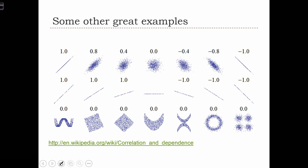Finally, I want to give you some examples of Pearson's R for some very peculiar scatter plots. In fact, the first two rows aren't peculiar at all.